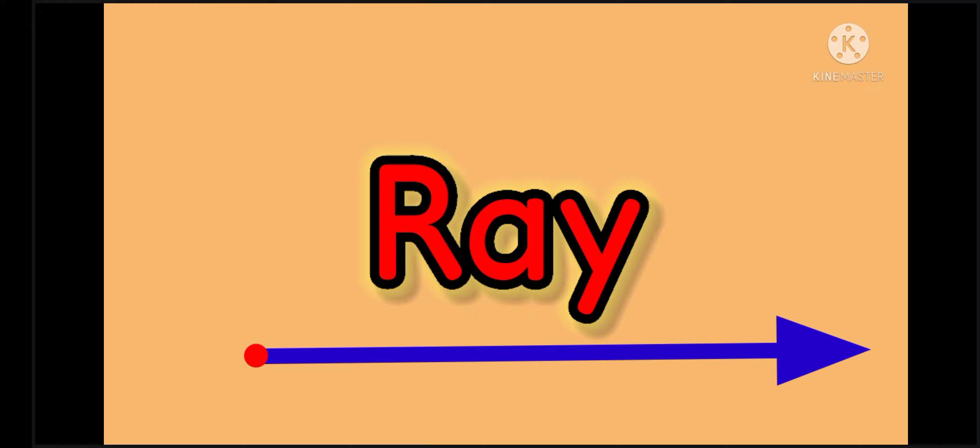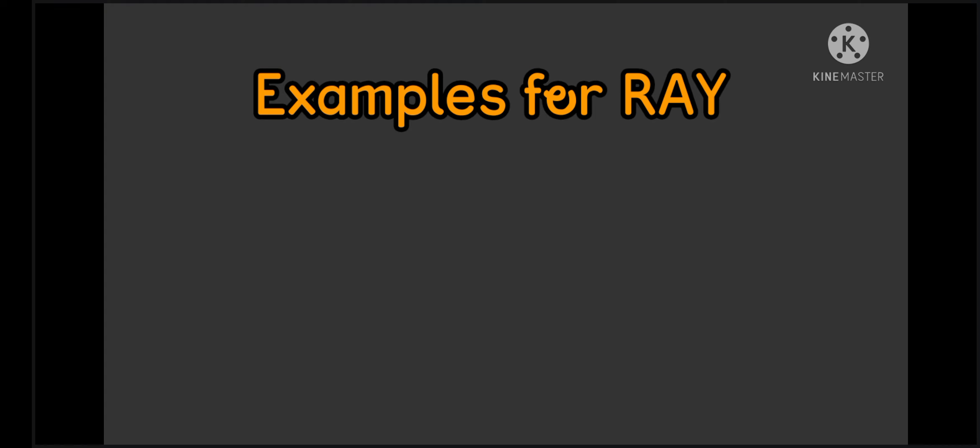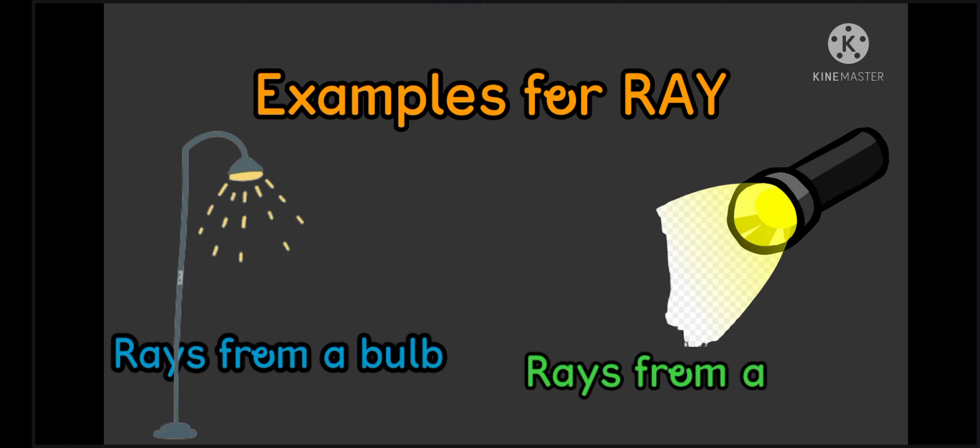Ray. A ray is a straight path that has one end point and goes on and on in a specified direction. As there is no second end point for a ray, we cannot measure the length of a ray. We denote a ray by the starting point and another point in the line. We read it as O A Ray. Examples for Ray: Rays from a bulb, Rays from a torch.